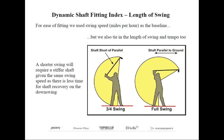Club head speed or velocity is typically measured in miles per hour, but can also be converted to feet per second. Let's say both of these golfers have a constant velocity of 85 miles per hour, or 125 feet per second, and both are using a 45-inch driver. The golfer on the left with a three-quarter swing might have that club travel a total distance of 8.13 feet from the top of the backswing until impact, while the golfer on the right taking the club back to parallel might see the club head travel a total of 12.19 feet. These are just approximations to help state the point.